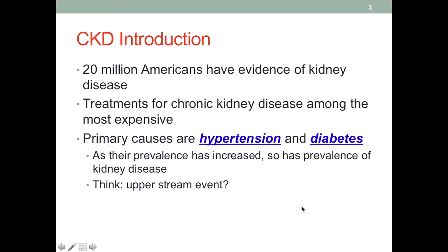About 20 million Americans have different kinds of kidney disease, which is obviously a very large number. The treatments for chronic kidney disease are among the most expensive of disease management. With the development of technology — for example, hemodialysis — and advancements in medication, people with CKD can survive for decades.